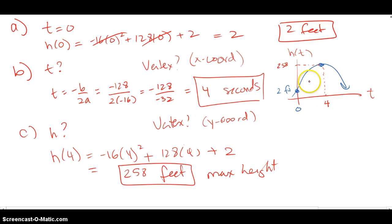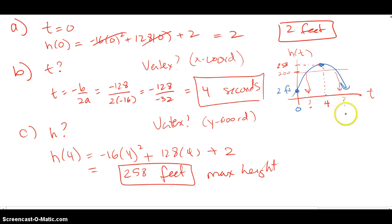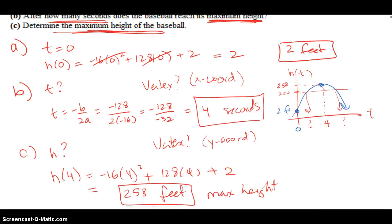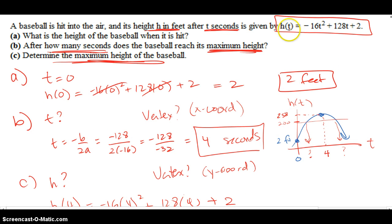We could also ask: when will the ball reach 200 feet? It's going to reach 200 feet on its way up and again on its way down. We could find that by plugging in y equals 200 for the height, moving everything to one side, and solving the quadratic equation by factoring to find the two t values.